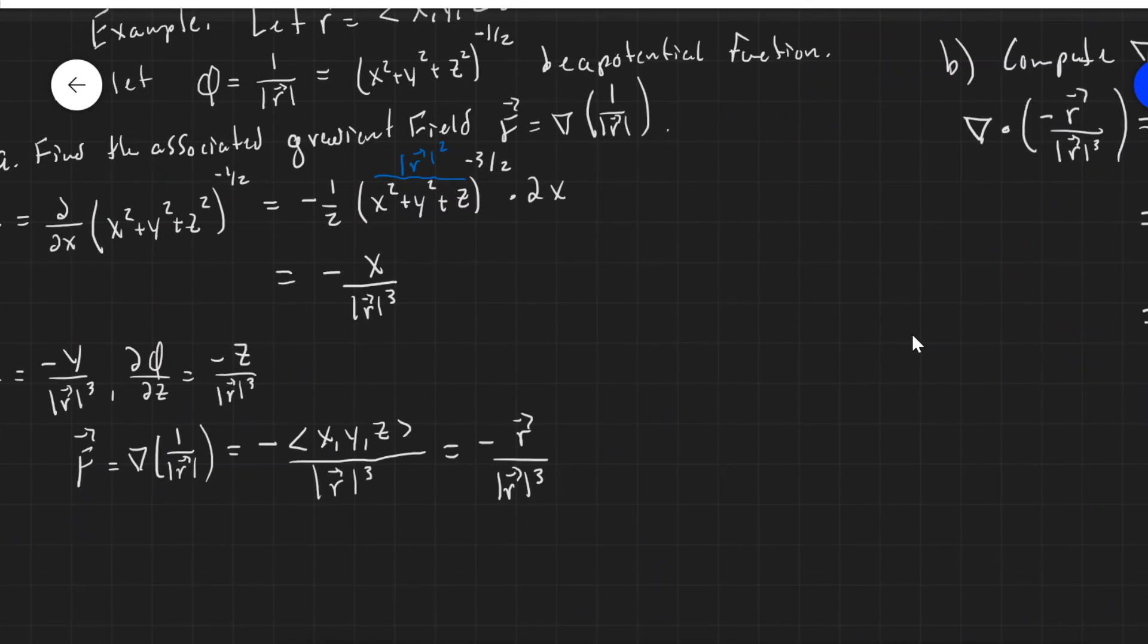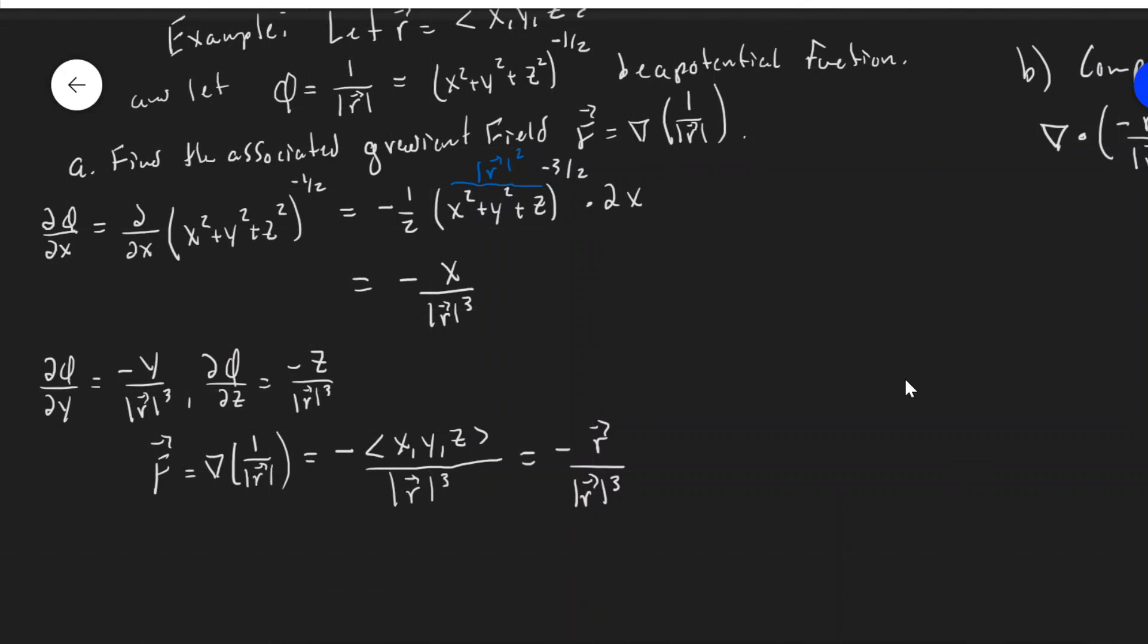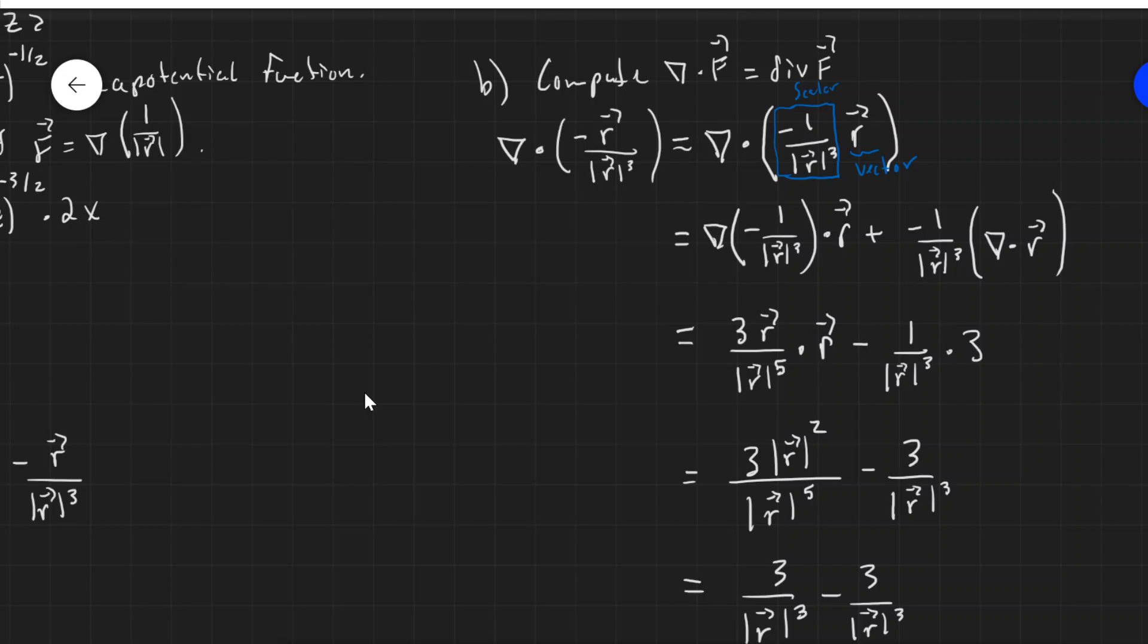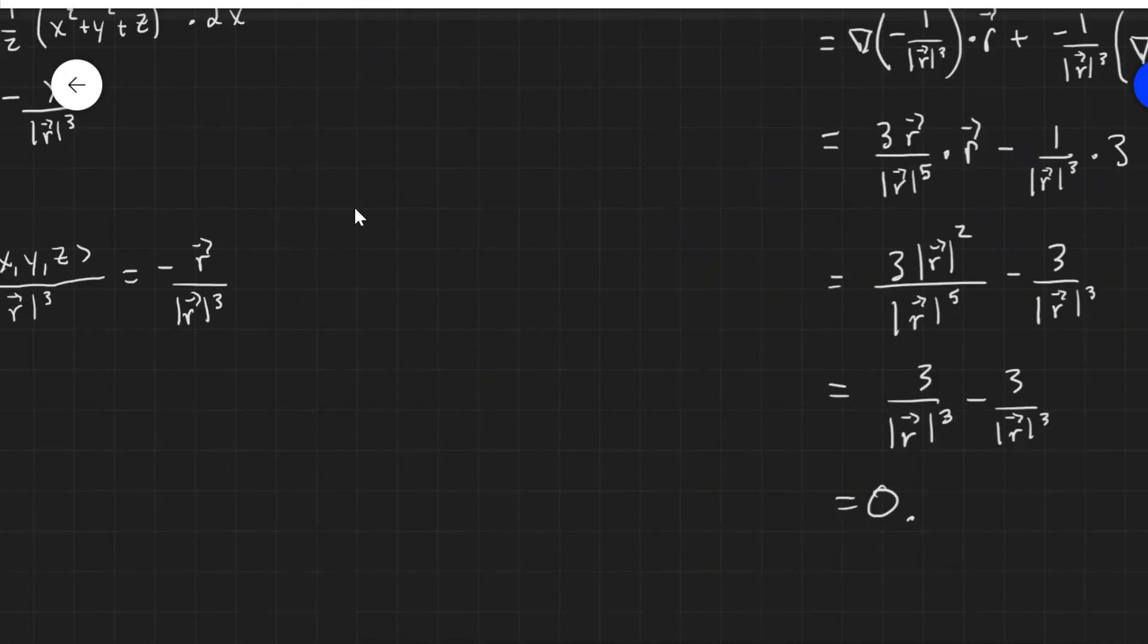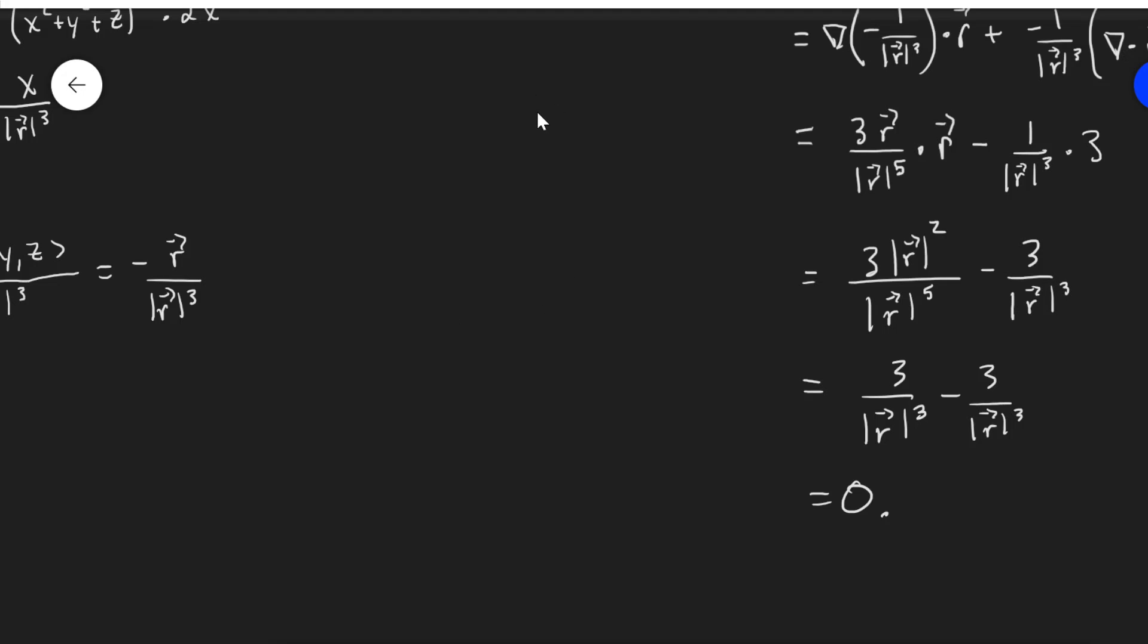And in fact, this is a special radial field that has the divergence being zero. There aren't any other radial fields that give this. So these inverse square fields are special in the fact that they have zero divergence.